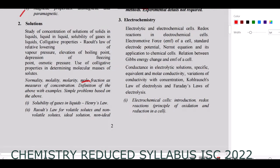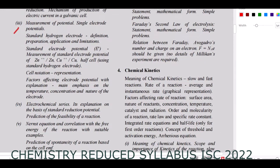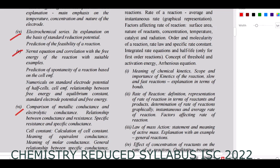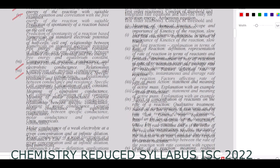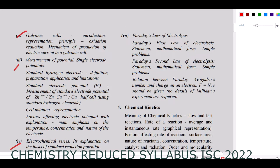For Electrochemistry: electrolytic and electrochemical cells, redox reactions, electromotive forces, Nernst equation, relation between Gibbs energy and EMF, conductance in electrolytic solutions, specific, equivalent and molar conductivity, variation of conductivity with concentration, Kohlrausch's law, and Faraday's laws are all present. Galvanic cell, measurement of potential, electrochemical series, and comparison of metallic and electrolytic conductance are also there.